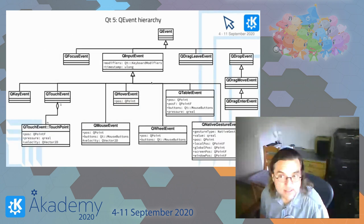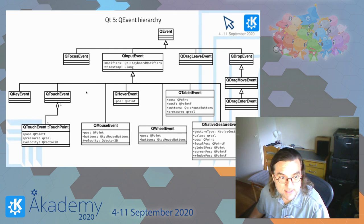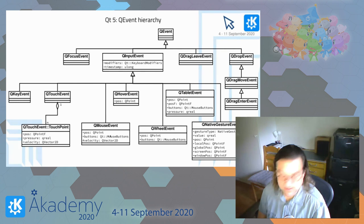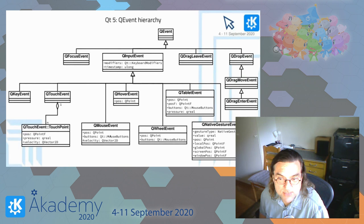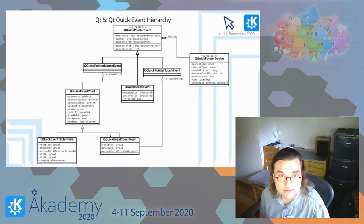The event hierarchy in Qt5 has only QInputEvent as a common base class for all pointer input, and that also includes QKeyEvent. The different event objects have similar but not identical APIs — for example, 'pos' is pretty much always there, but in TouchPoint it's a QPointF and in MouseEvent it's a QPoint. This isn't polymorphic; you have to know the actual leaf event type to handle it, so you can't handle all input events the same way.